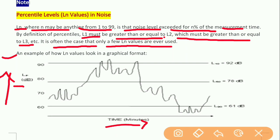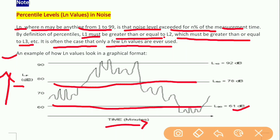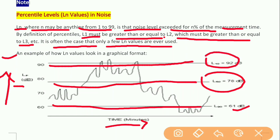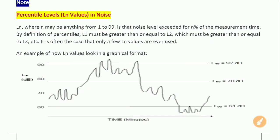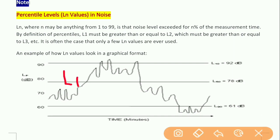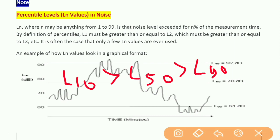In the graph, you can see that the L90 value is, suppose, 61 decibels — that is your L90 value. L50 is the median value. L10 represents a very high noise level. In terms of magnitude, the value of L10 is greater than L15, which is greater than L19. Keep this in mind, as questions can be asked from this aspect.